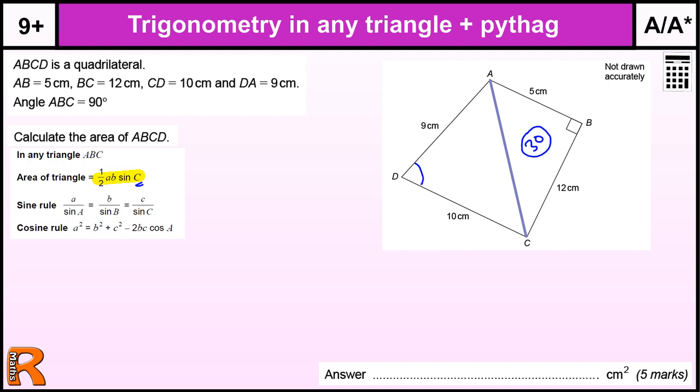And to work out that angle, to find that angle we're going to have to use the cosine rule, this rule here. Because we can't use a sine rule because we need to know at least one angle to do a sine rule. We don't know any angles in this triangle at all.